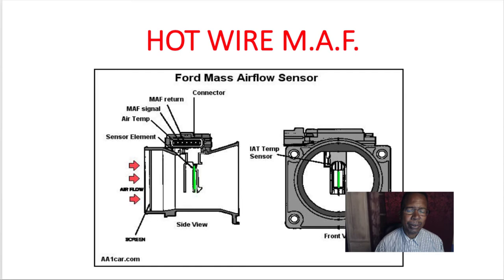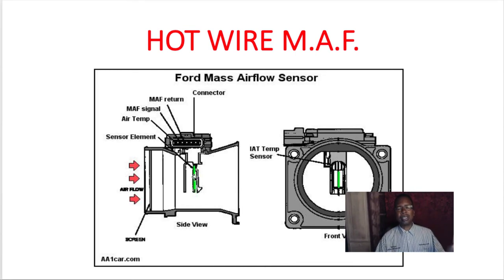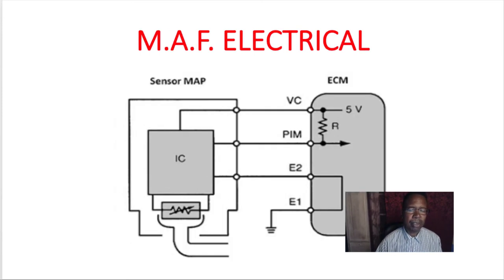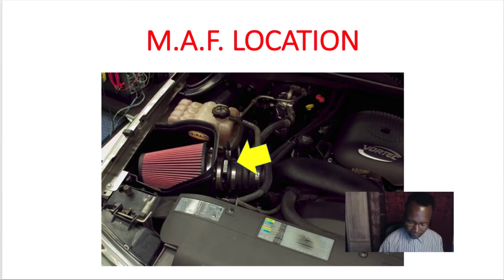Here's the hot wire again with the air temperature going through it. It has the electrical connection, air temperature sensing element — air goes through it, cools it down, and the computer sends current to heat it back up. The intake air temperature sensor is also hooked up to this circuit to sense the temperature of incoming air. Here's a wiring diagram on the mass air flow sensor — you can see it has five volts, a signal return, and a ground. The mass air flow sensor is located right in front of the air cleaner, which obviously helps keep it clean.